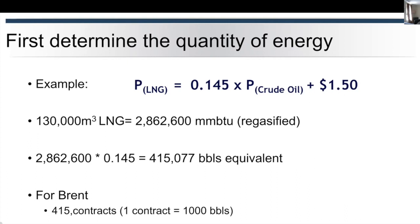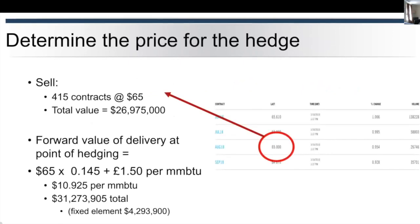We're looking at about 415,000 barrels of oil equivalent. So for a Brent contract you've got 415 contracts (one contract is about a thousand barrels). Once we've established the amount of futures that we need to purchase or sell (in this case), we're looking at the August delivery price currently trading at $65 in this example.